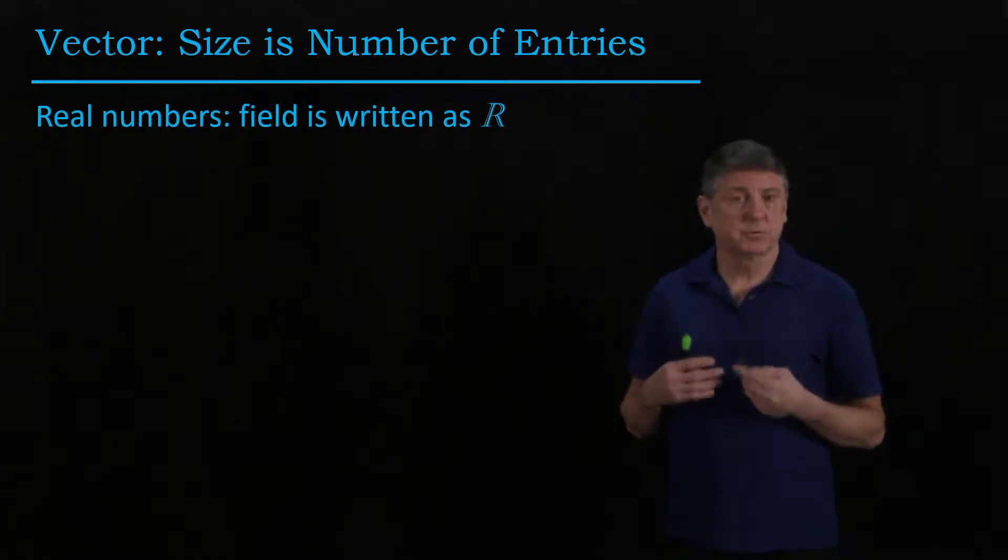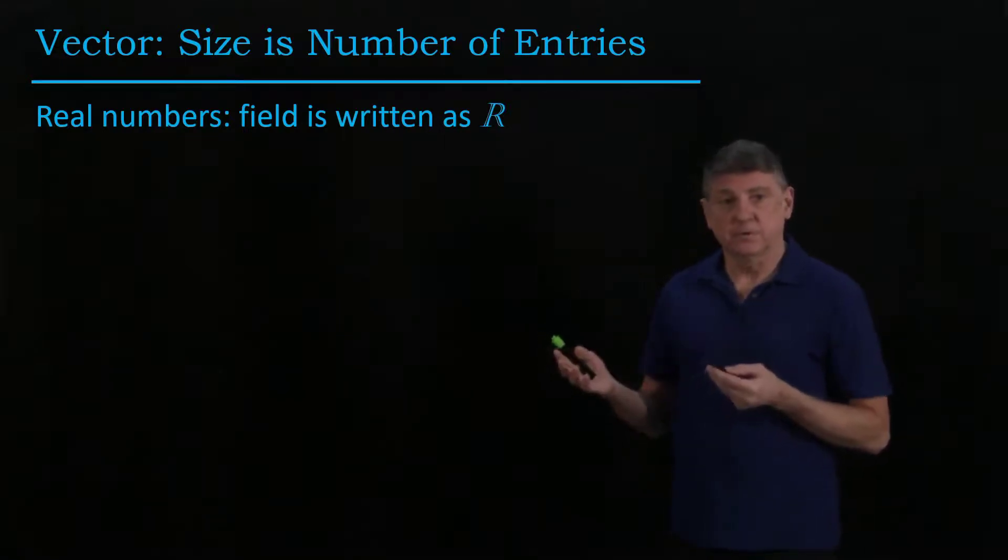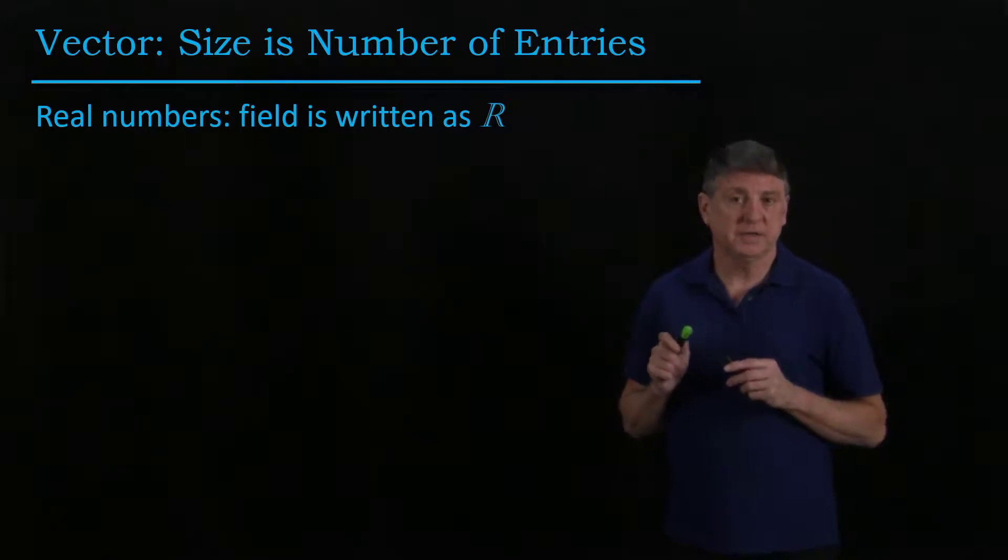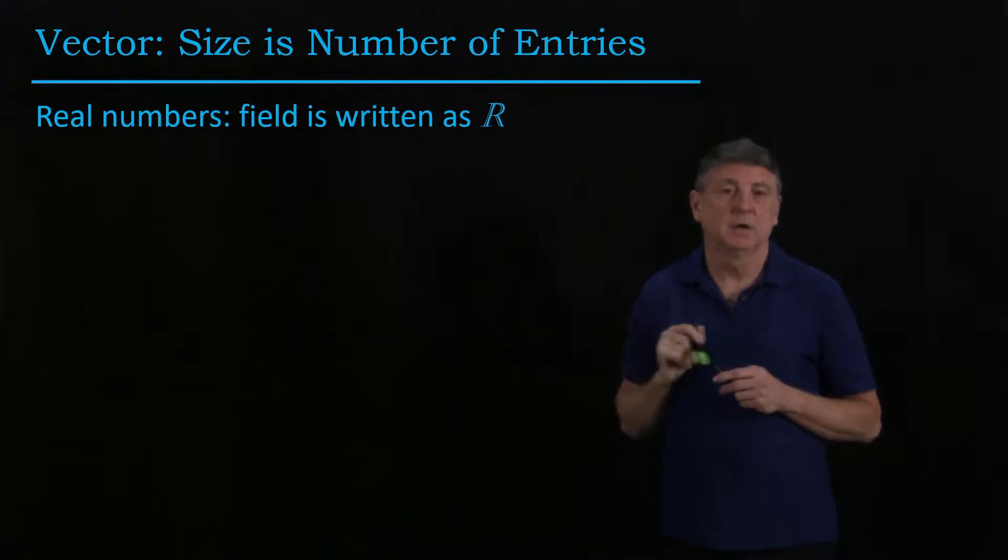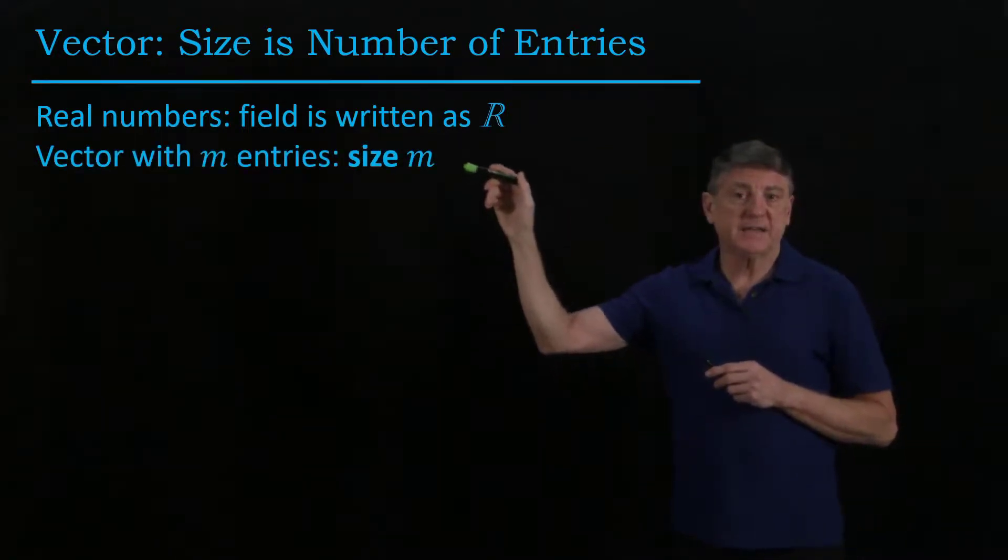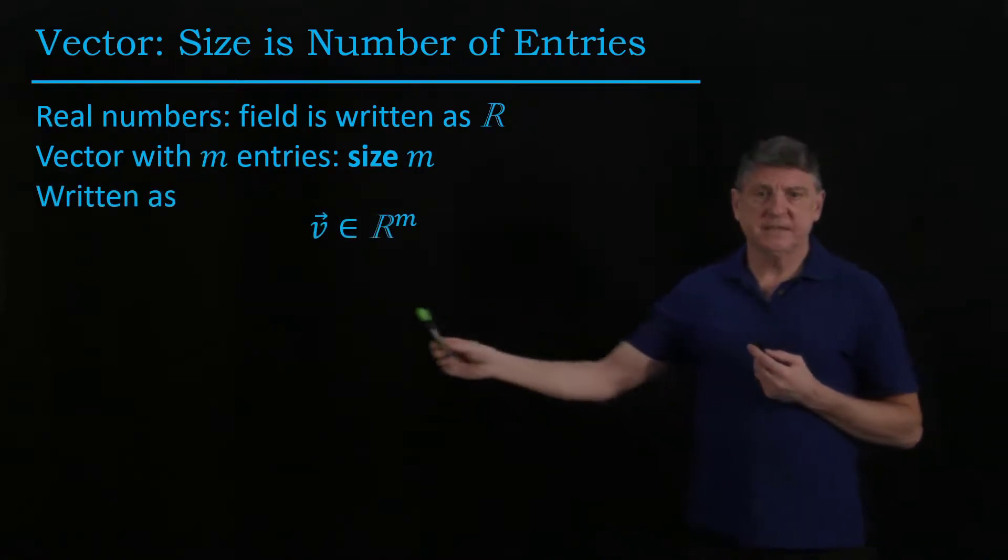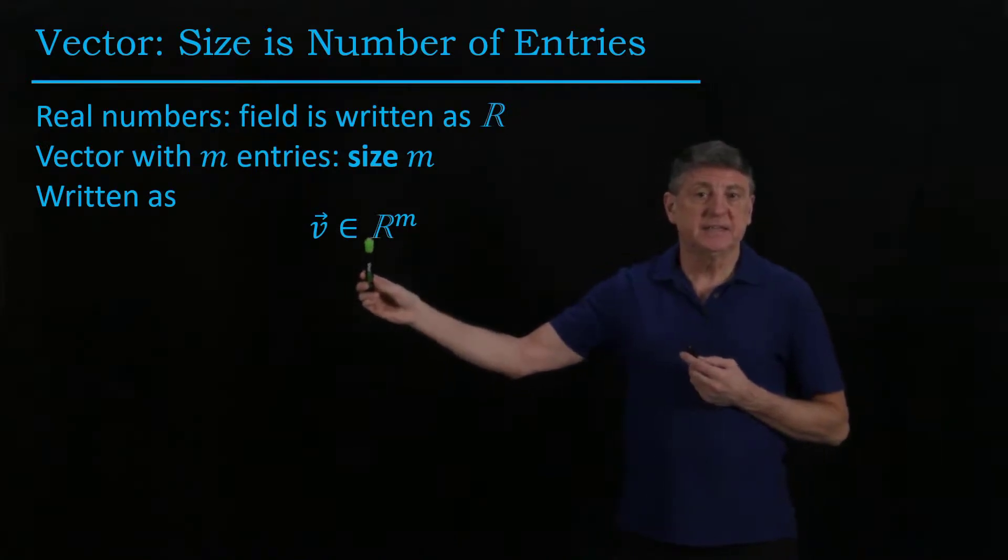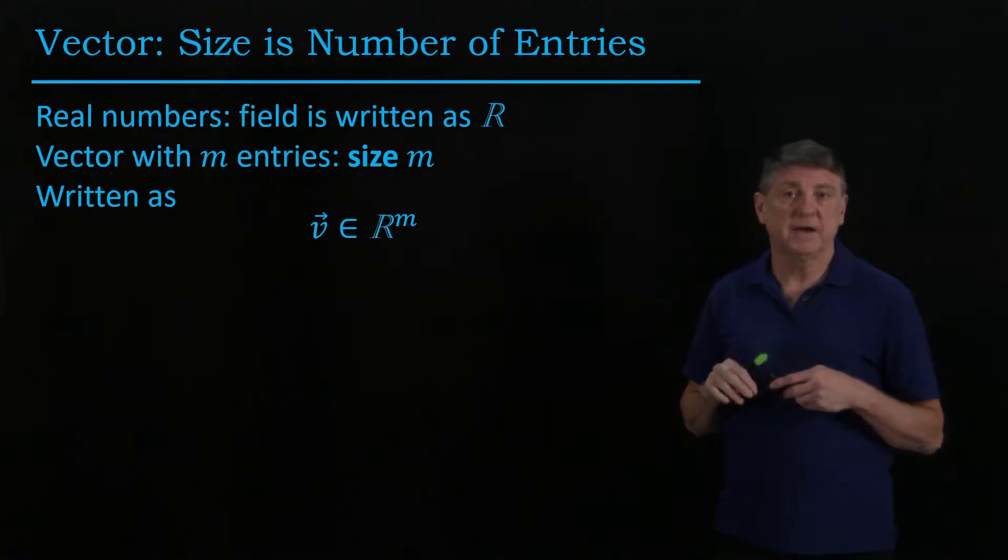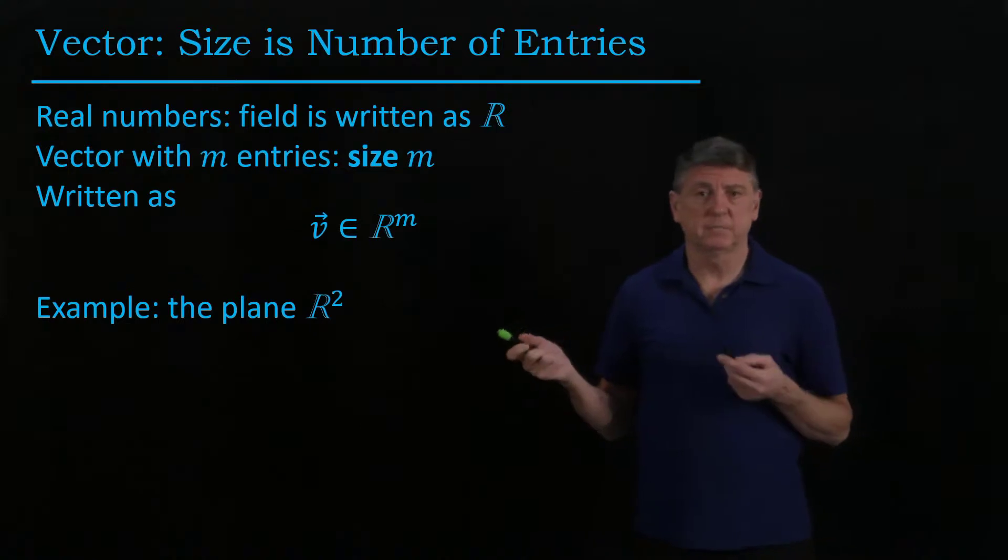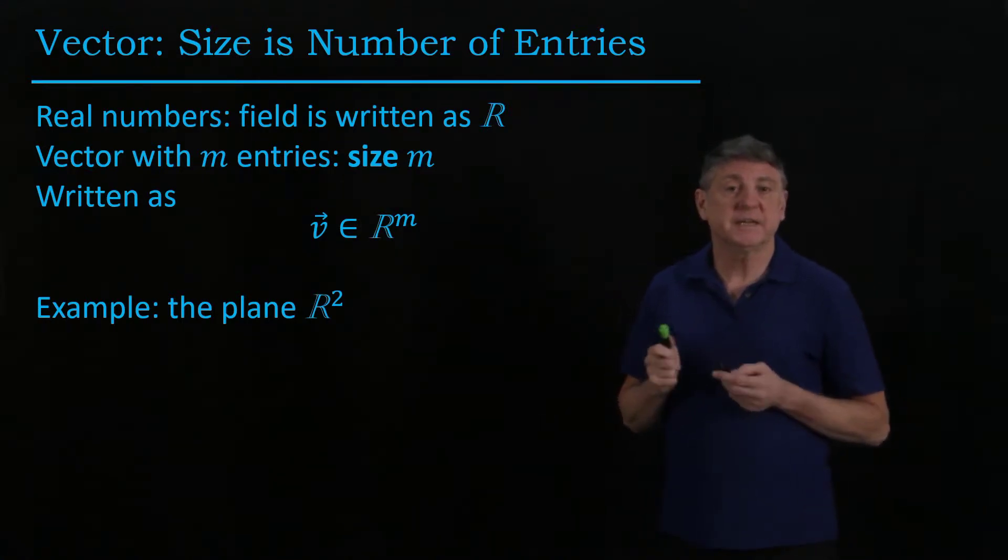We're going to use some terminology that comes from the programming language MATLAB that we'll use a lot. And we'll refer to the number of entries of a vector as its size. Each entry is going to be a real number. And real numbers are mathematically a field. And we'll write this as R with this double post on it. And if a vector has m entries, we'll say that its size is m. And what we'll write this as is we'll say a vector v, for example, that has m entries is in the space R^m. One example that we're all familiar with from geometry is the plane, R squared, which is vectors with two entries, and each entry can be a real number.